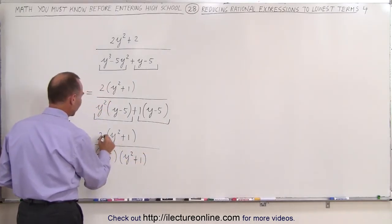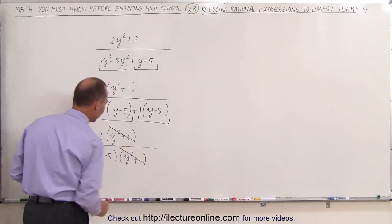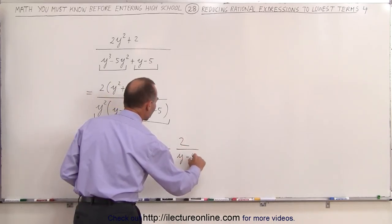Now notice that since this is multiplied and this is multiplied, we can go ahead and simplify by canceling this with this. And then we're finally left with 2 divided by y minus 5.